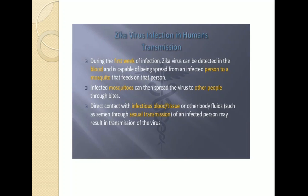During the first week of infection, Zika virus can be detected in the blood and is capable of being spread from an infected person to a mosquito that feeds on that person. The infected mosquito can then spread the virus to other people through its bite. Direct contact with infectious blood, tissue, or other body fluids such as semen through intercourse with an infected person may also result in transmission.